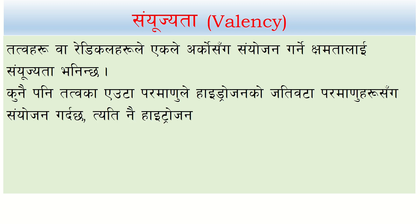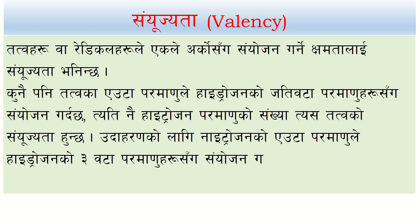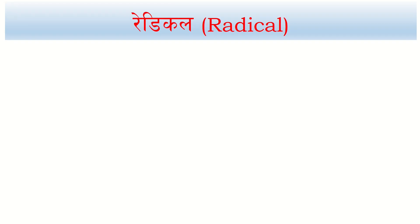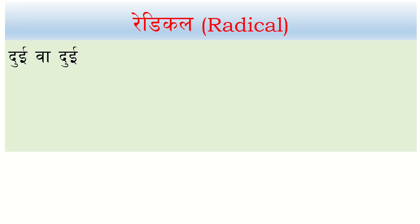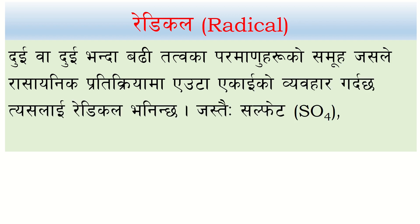Nitrogen's valency (sunyoujata) — for example, one atom of nitrogen combines with three atoms of hydrogen to form ammonia, so nitrogen's valency is 3. A radical is a group of two or more atoms that behaves as a single unit in a chemical reaction.